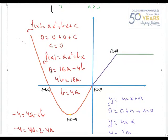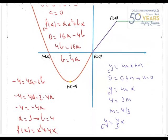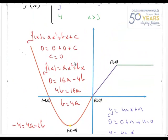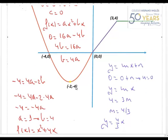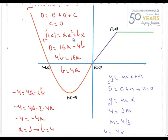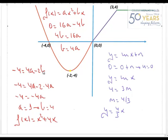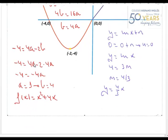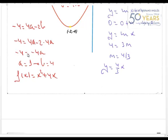Le digo ahora que pase por el punto (-4, 0): donde está la x pongo -4 y quiero que f(x) sea 0. Por tanto, 0 = 16a - 4b, lo que da b = 4a. Después le digo que pase por el vértice (-2, -4): cuando x=-2, f(x) debe valer -4. Sustituyendo: -4 = 4a - 2b = 4a - 8a = -4a, por tanto a=1 y b=4.